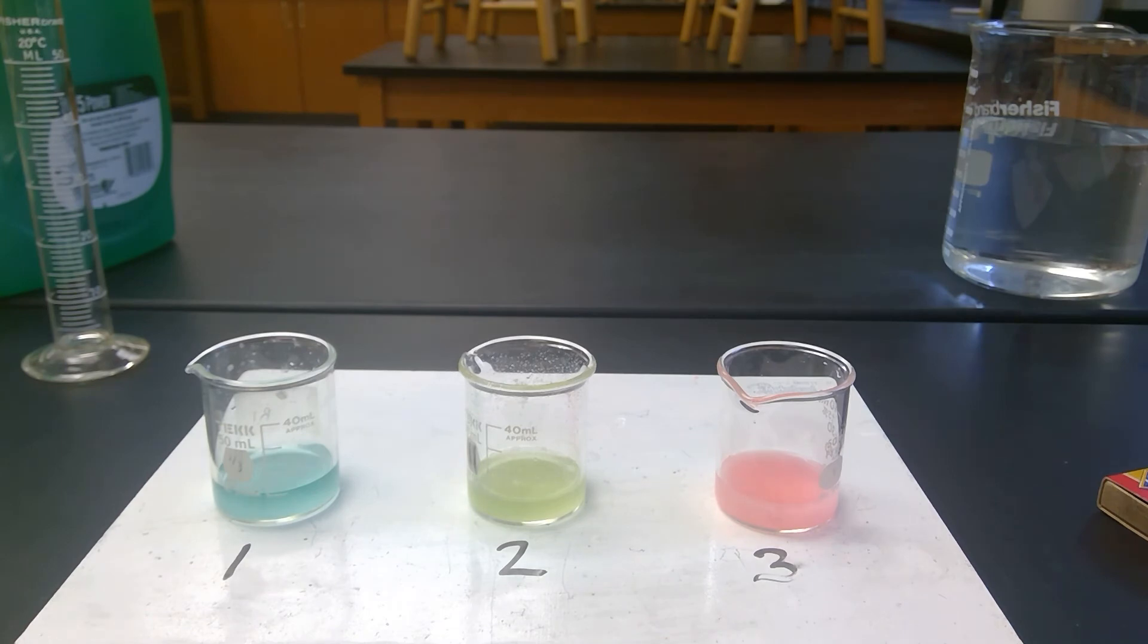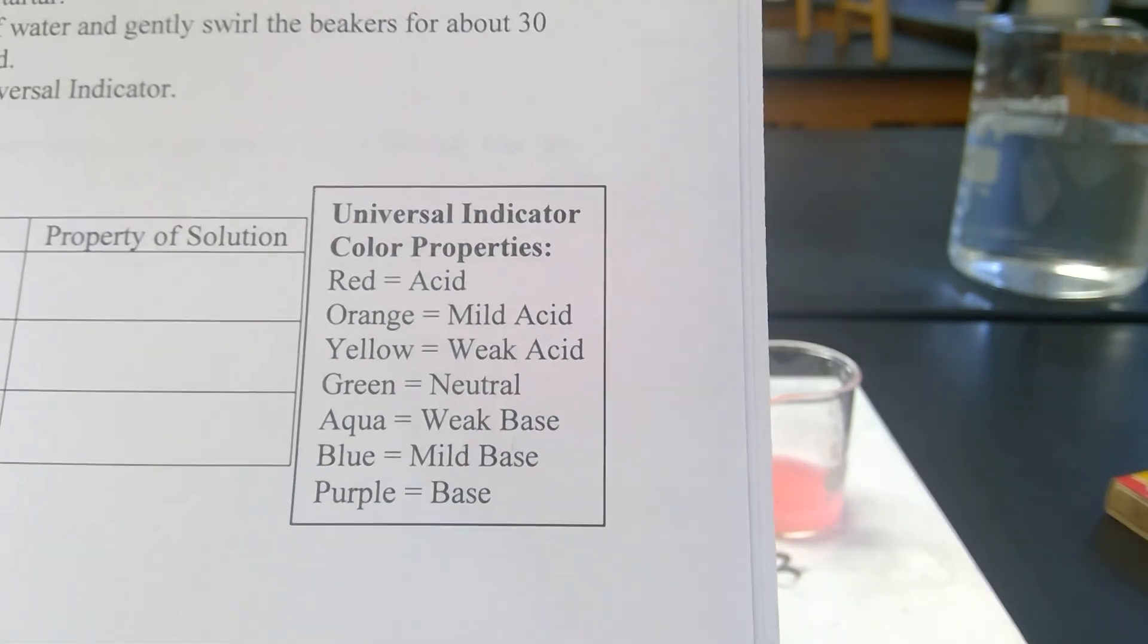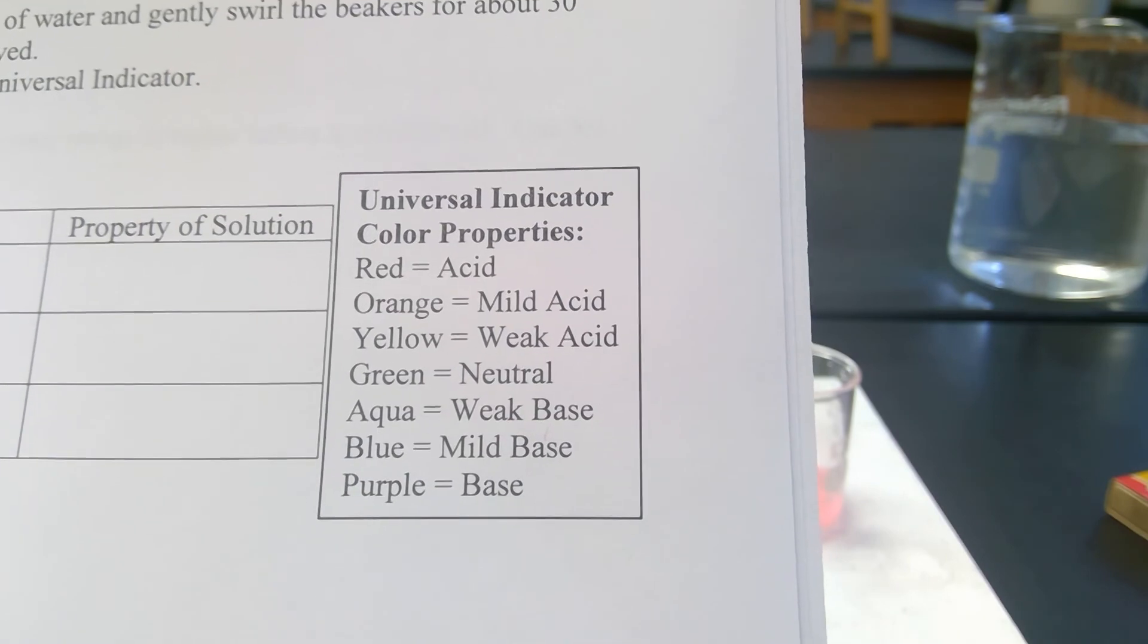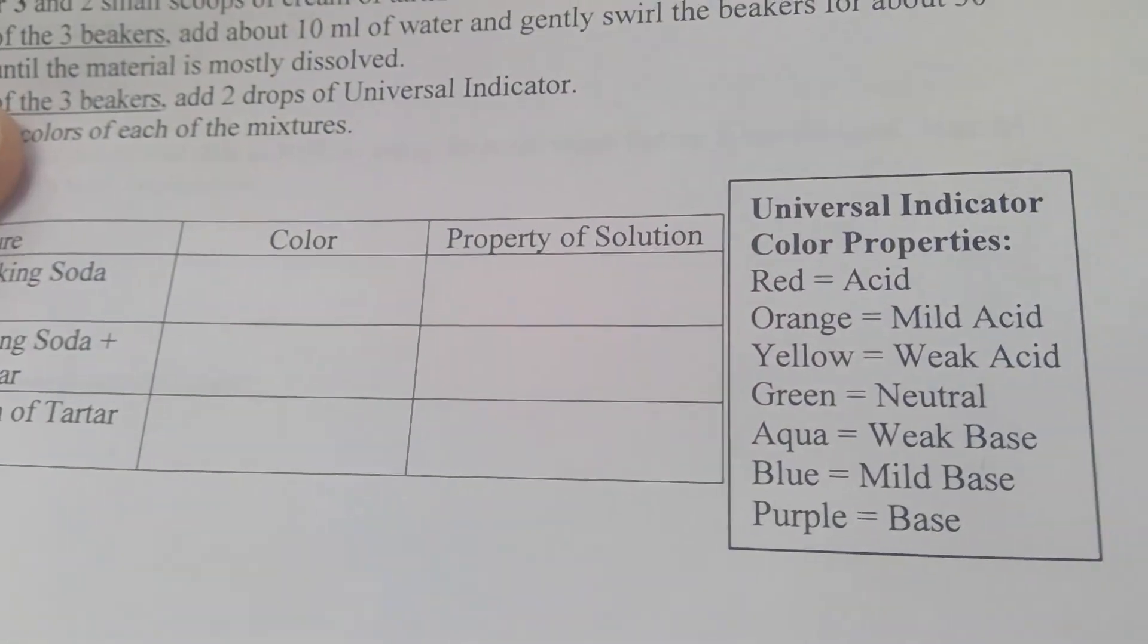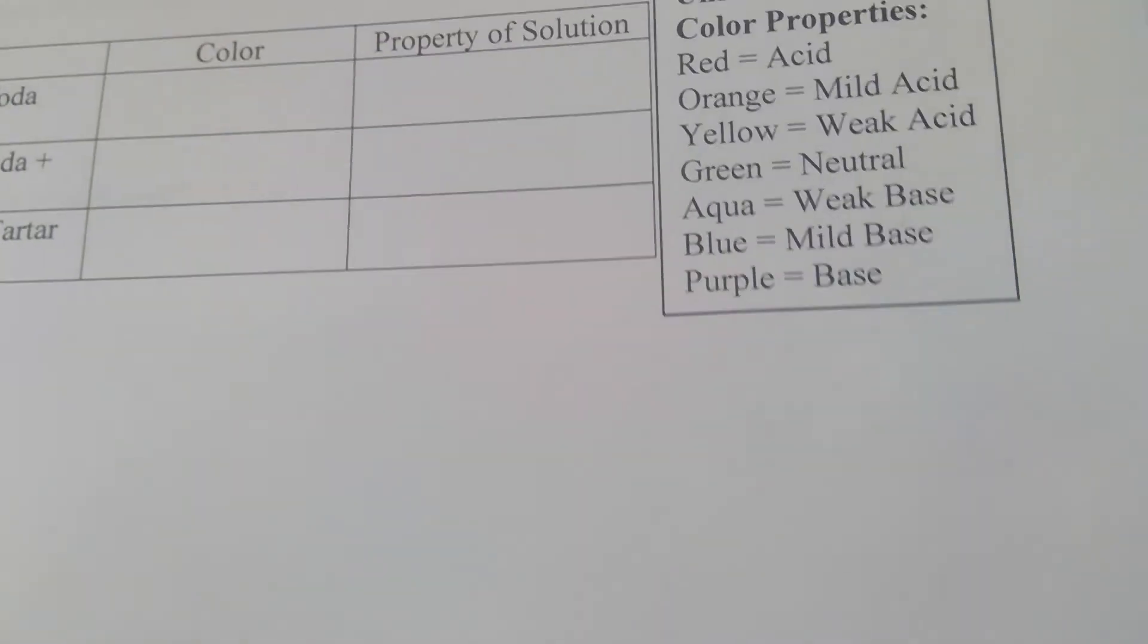So the universal indicator, if you look on your table here, there should be a color code scheme. So that should tell you which property of the solution each of these is. So you will fill in on the table the color and the property of the solution.